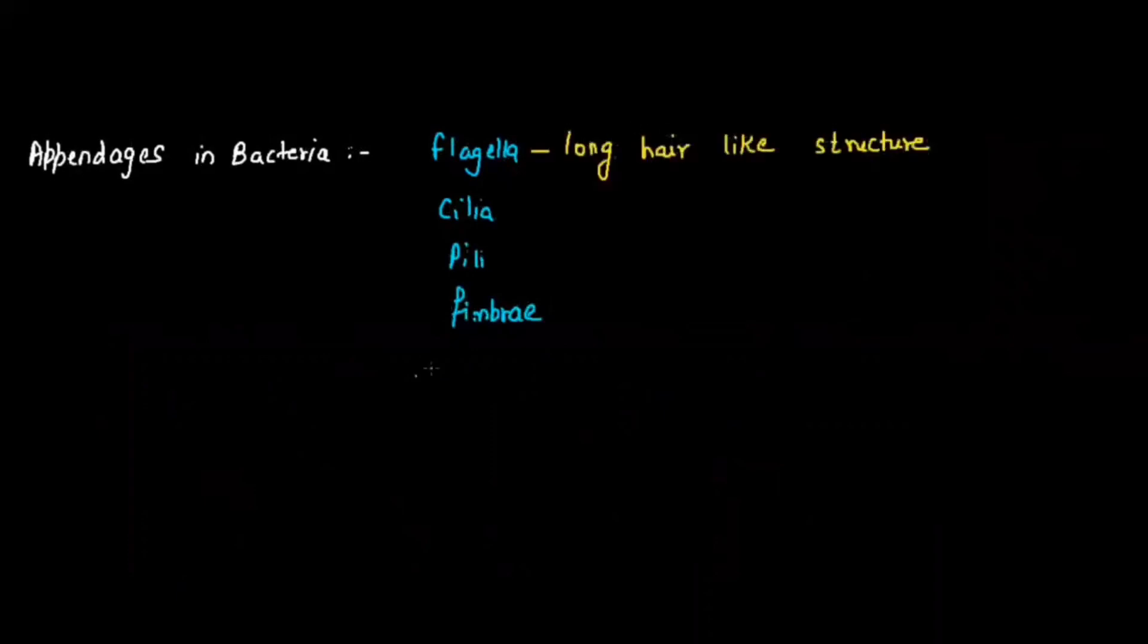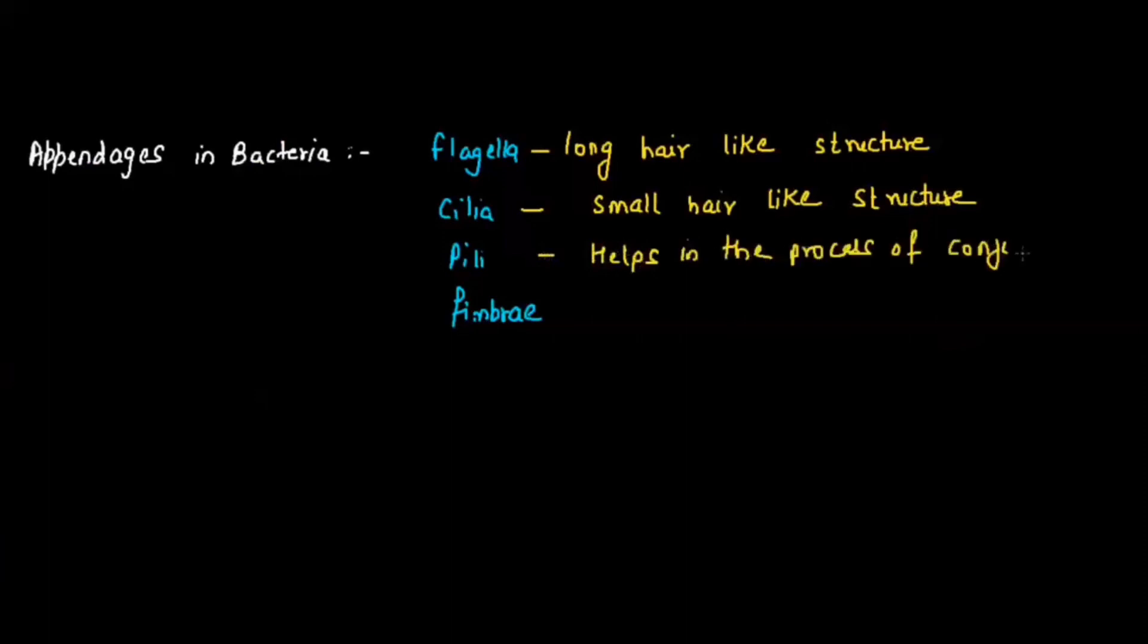Whenever we talk about appendages found in bacteria, there are different appendages. The first one is flagella, and we have cilia, pili, and fimbriae. Flagella is long hair-like structure that helps in locomotion. Cilia is a small hair-like structure that helps in movement of substances. Pili helps in the process of conjugation, which means sexual reproduction. Fimbriae helps in clinging to a support, meaning attachment to other bacteria.